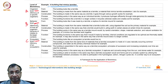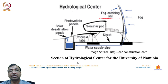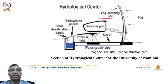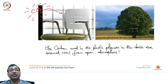One example is the Hydrological Centre for the University of Namibia — a fog-catching sail structure where moving fog condenses on the structure, collecting water. This cross-section shows how utilitarian strategies can be devised and designed on-site to deal with specific natural conditions.